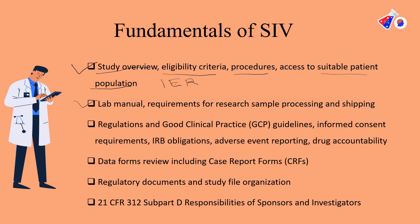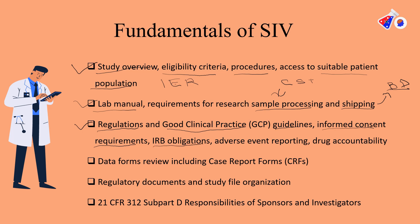When collecting lab samples such as blood or serum samples, they must be handled in a specific manner, so the lab manual is discussed by the lab team. Requirements for sample processing and shipping are covered — including centrifugation time, storage temperature, the number of batches, and the days on which samples need to be shipped. The regulatory aspects are also covered: GCP guidelines, how informed consent should be taken — whether paper-based or electronic — and IRB obligations.